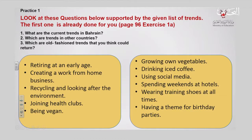In the two boxes here, we see many different kinds of trends. For example: retiring at an early age, creating a work-from-home business, recycling and looking after your environment, joining healthy clubs, being vegan, growing your own vegetables, drinking iced coffee, using social media, spending weekends at hotels, wearing training shoes at all times, and having a theme for birthdays.